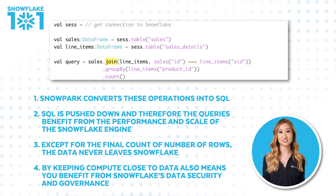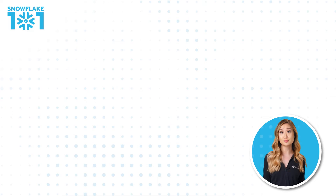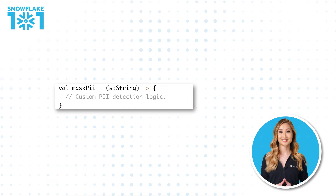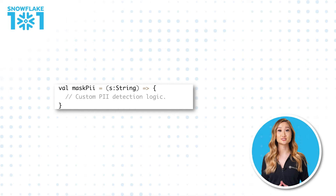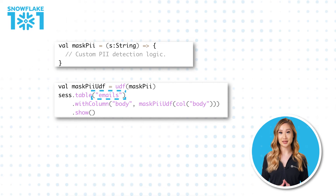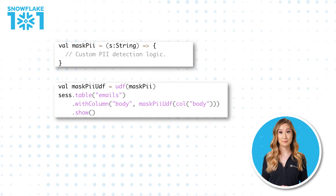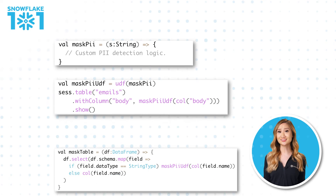But Snowpark is a lot more than just constructing data frames. You can bring along your custom logic in the form of UDFs that are executed on the server side in a secure sandbox. Let's imagine that you have some custom code to mask personally identifiable information, like this. We can call our custom UDF when using our Snowpark data frames, like this. Notice how we provide a fixed table name, emails, and a fixed column name, body. We can also make this dynamic by applying our data masking UDF to all string columns in any given table, like this.